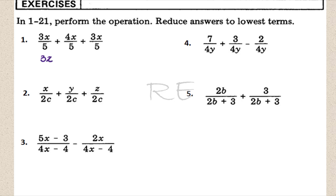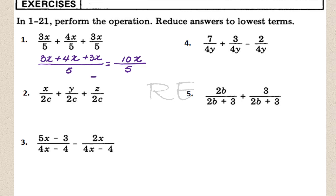The denominators are the same, so we just add the numerators: 3x plus 4x plus 3x over 5. 3x plus 4x is 7x, plus 3x is 10x. The answer is 10x over 5, and 10 over 5 is 2.